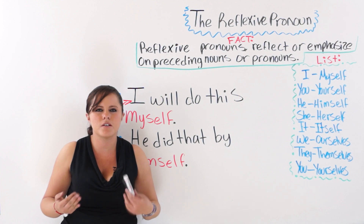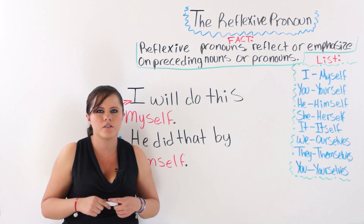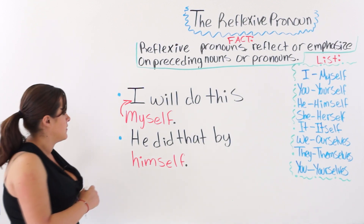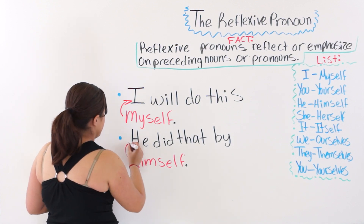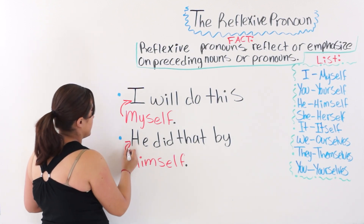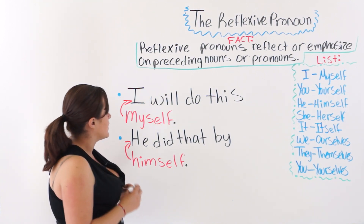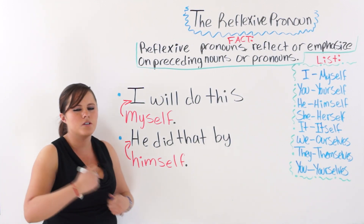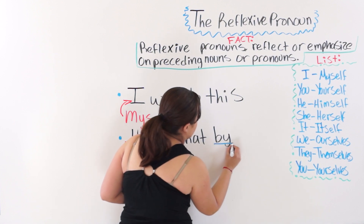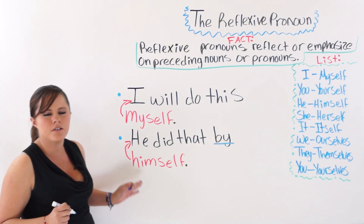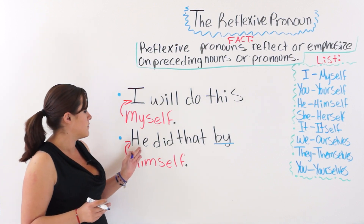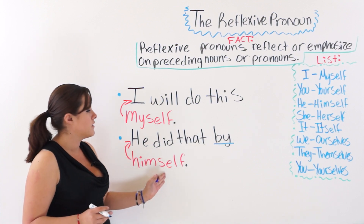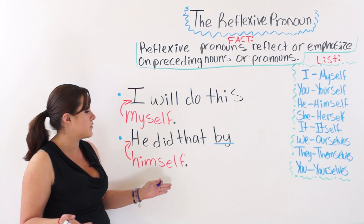You may be familiar with the phrase: if you want something done right, you have to do it yourself. The next example is: he did that by himself. This reflexive pronoun reflects on the pronoun 'he.' Something important to explain is that when you use the preposition 'by' before a reflexive pronoun, it means that person did something alone, without help.